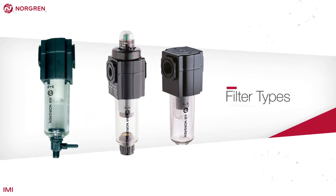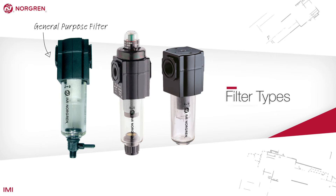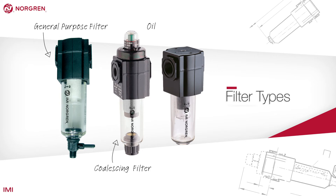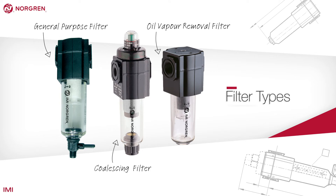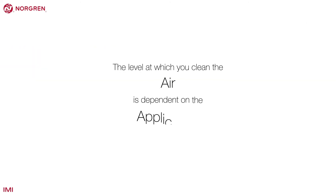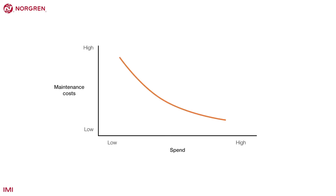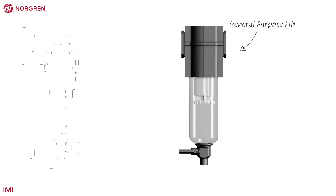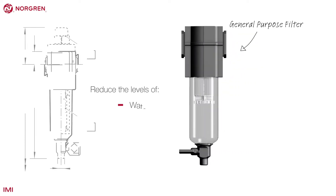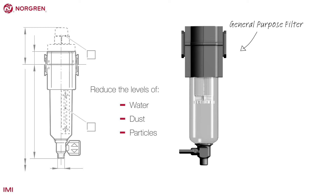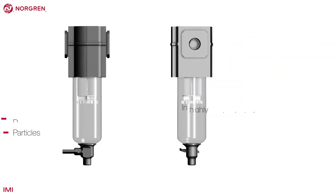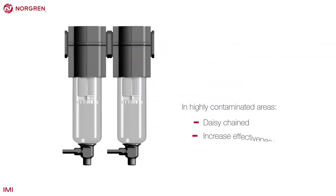Here are three filters: a general purpose filter, a coalescing filter and an oil vapor removal filter. The level at which you clean the air is dependent on the application, and the level of spend needs to be justified based on the reduced maintenance costs. A general purpose filter can be used to reduce the levels of water, dust and particles in compressed air. In particularly contaminated areas, they can be daisy chained to increase effectiveness.